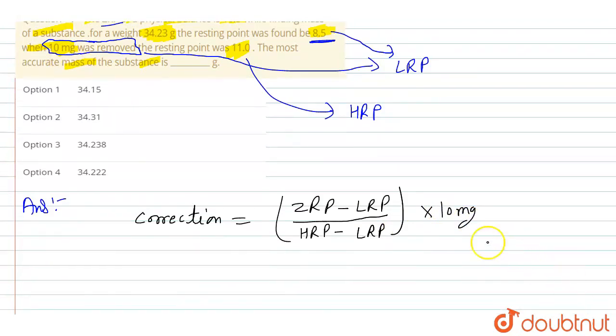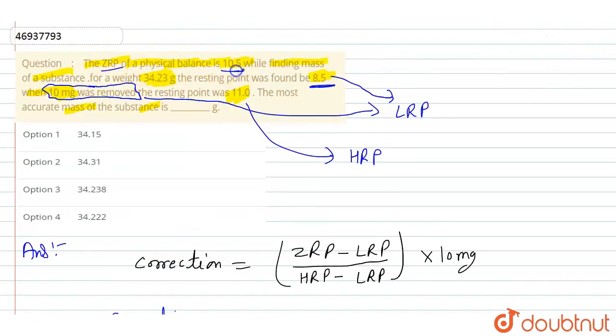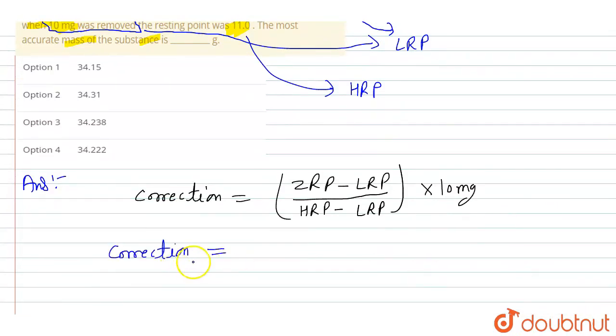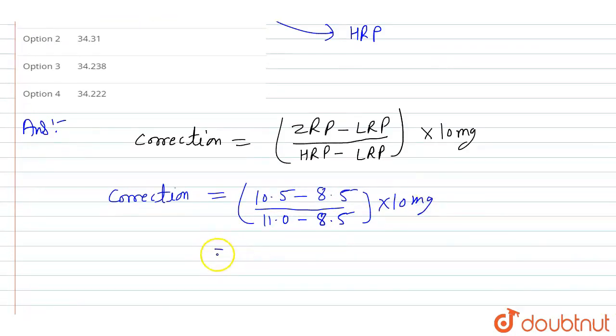Correction equals 10.5 minus 8.5 divided by HRP 11.0 minus LRP 8.5. That's 10.5 minus 8.5 divided by 11.0 minus 8.5.